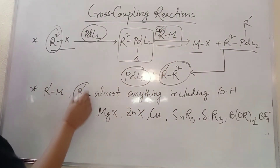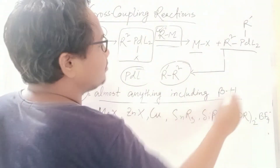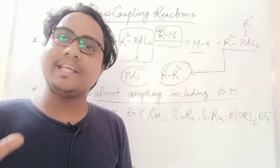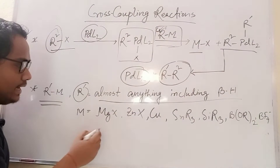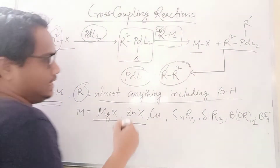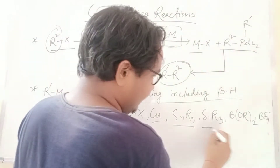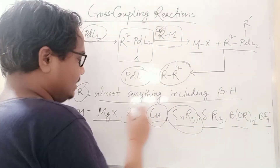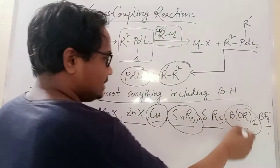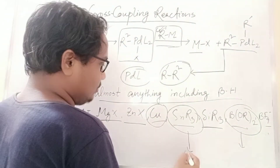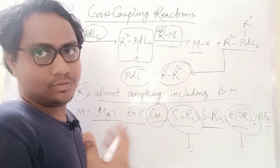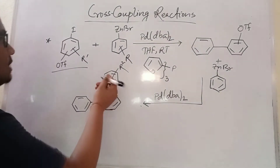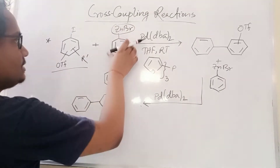R1 can be almost anything including beta hydrogen. The metal can be MgX, ZnX, copper, tin, silicon, or boron. If boron is the metal, it causes Suzuki coupling; if tin, it is Stille coupling; if copper, it is a different coupling. We will now discuss these in detail.